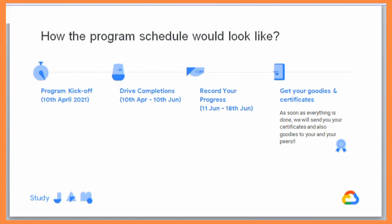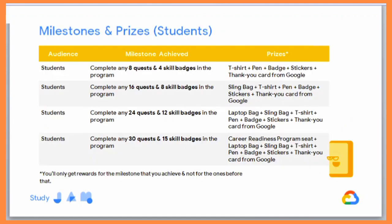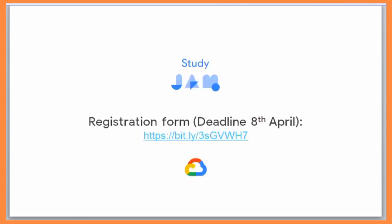Regarding the program schedule, facilitators will guide you on how to complete quests and labs — if you have any problems, connect with them. You have a time limit to complete all the quests. The milestones and rewards are: after completing 8 quests and skill badges, you receive T-shirts, pen badges, stickers, and a thank-you card from Google. Complete an additional 8 quests and 4 skill badges and you get a sling bag. Complete even more — 8 quests and 4 skill badges further — and you earn a laptop bag.